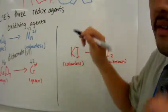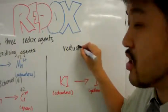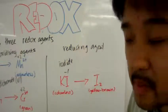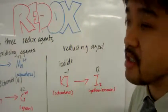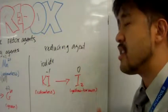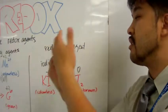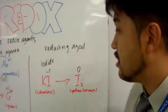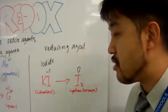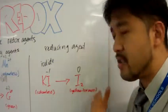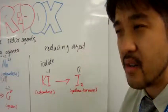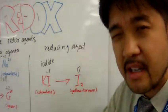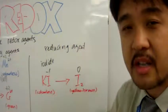Finally, we have an example of a strong reducing agent: potassium iodide. Iodide has an oxidation number of minus 1, and when it becomes iodine in solution, it has an oxidation number of 0. So its oxidation number increased, which means it was oxidized — therefore potassium iodide is a reducing agent. Potassium iodide is colorless in solution, but when iodine forms, it turns yellow when very dilute and brown when more concentrated.